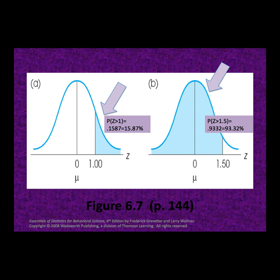What is the probability of having a z-score that is less than 1.5? Sketching the curve and marking 0 and 1.5, we are looking for the probability below 1.5. Shading this probability, we can see that it is the larger proportion or the proportion in the body. Following the z-table down to a z-score of positive 1.5, we see that 93.32% of the data fall below a z-score of positive 1.5.